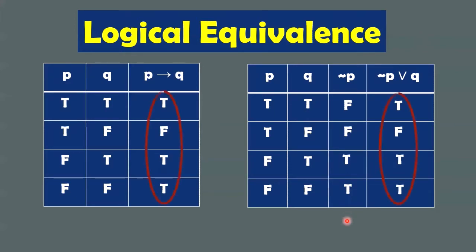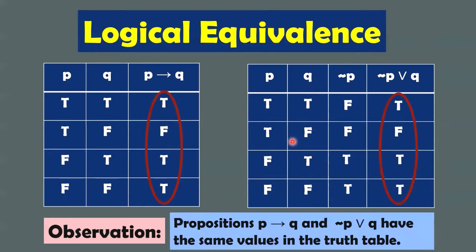What do you observe? Look at the sets of truth values — they both have T, F, T, T. They have the same set of truth values given this combination of truth values of P and Q. So propositions 'if P then Q' and 'not P or Q' have the same values in the truth table.